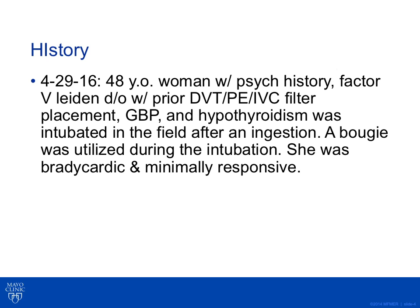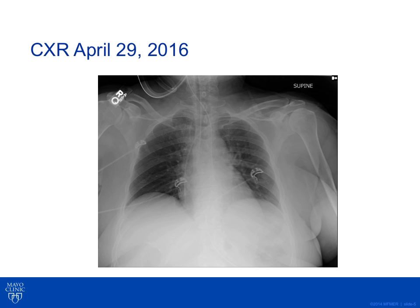A bougie was utilized during the intubation. She was bradycardic and minimally responsive. The chest X-ray obtained immediately after admission shows the endotracheal tube appears to be in correct position. The tip appears to extend beyond the carina, but it is not clear that she has a pneumothorax, subcutaneous air, or any other acute problems.